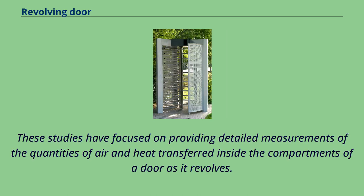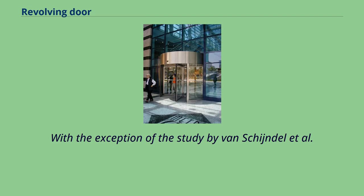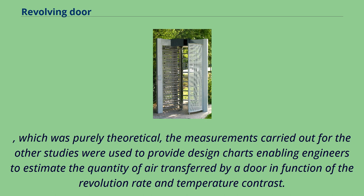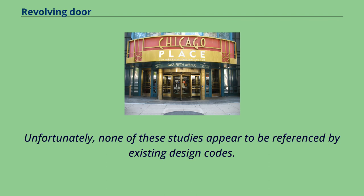These studies focused on providing detailed measurements of the quantities of air and heat transferred inside the compartments of a door as it revolves. With the exception of the study by Van Kennel et al., which was purely theoretical, the measurements carried out for the other studies were used to provide design charts enabling engineers to estimate the quantity of air transferred by a door as a function of the revolution rate and temperature contrast. Unfortunately, none of these studies appear to be referenced by existing design codes.